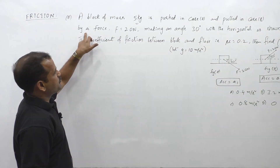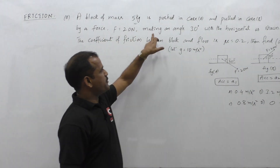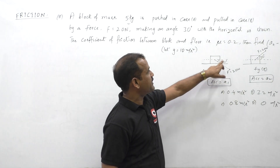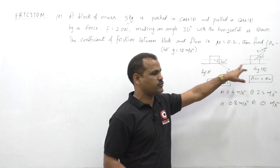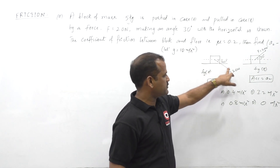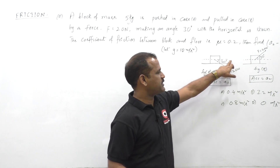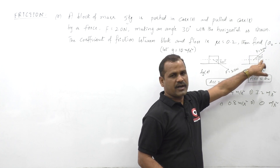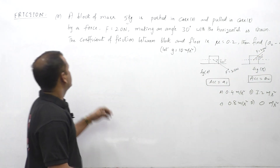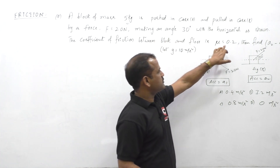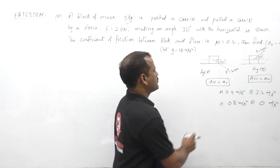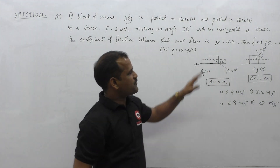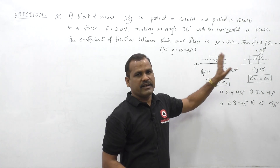The block is acted upon by a force of 20N making an angle of 30 degrees with the horizontal, as shown in both figures. The coefficient of friction between the block and the floor is 0.2. Find the acceleration difference A2 minus A1.